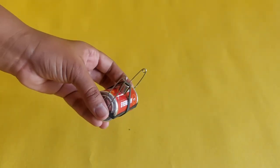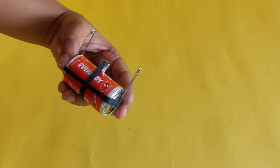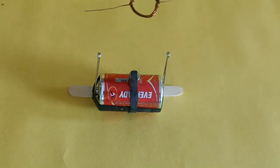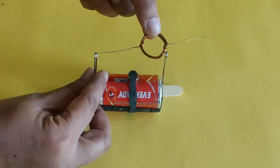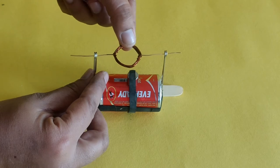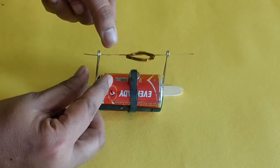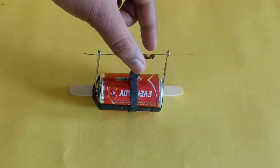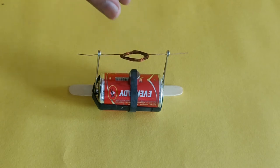The setup should look something like this. Take the copper wire loop and insert the two ends of the wire into the safety pin loops. Make sure the copper wire loop is right above the magnet but does not touch it. Adjust the height of the safety pins if required.